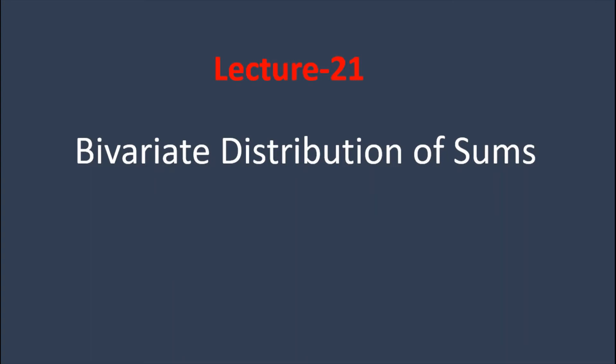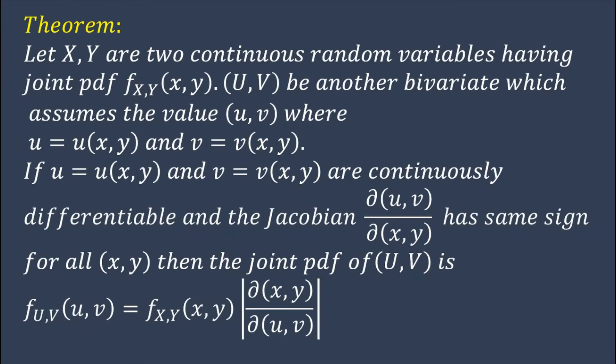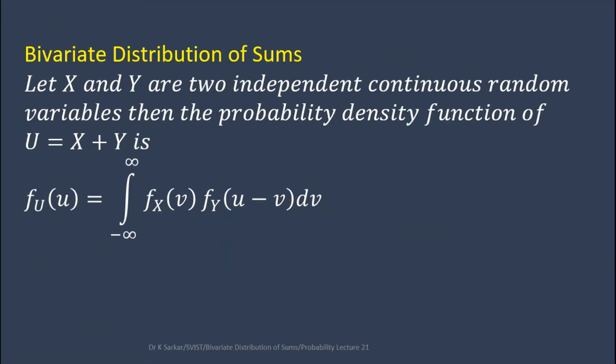Here is one theorem. Let X and Y be two continuous random variables having joint PDF f. Let (U, V) be another bivariate which assumes the value (u, v) where u equals U(x, y) and v equals V(x, y). If U and V are continuously differentiable and the Jacobian del(u,v)/del(x,y) has the same sign for all (x, y), then the joint PDF of (U, V) is f(u,v) equals f(x,y) multiplied by the modulus of the Jacobian.